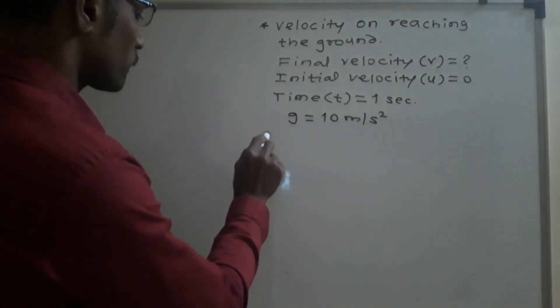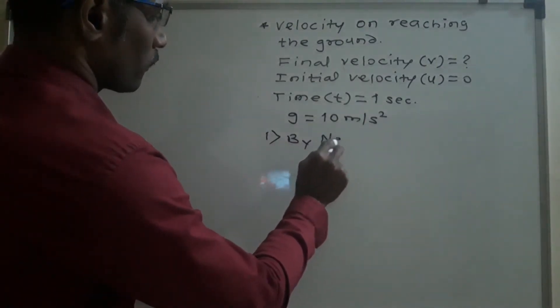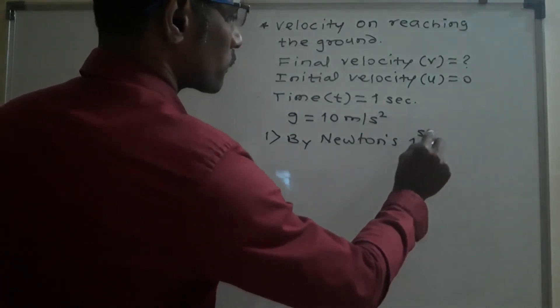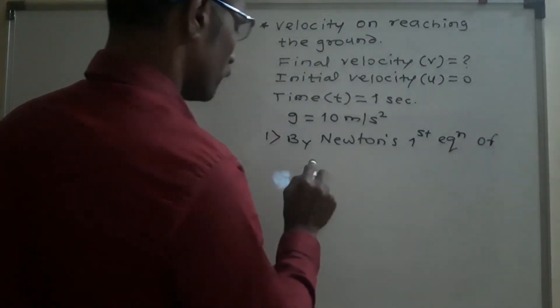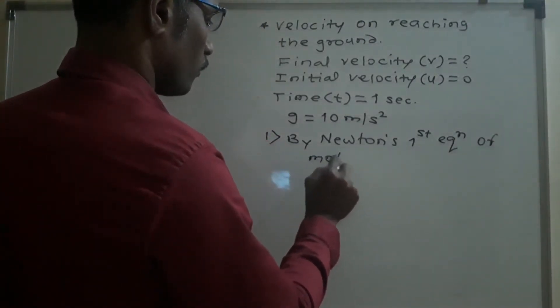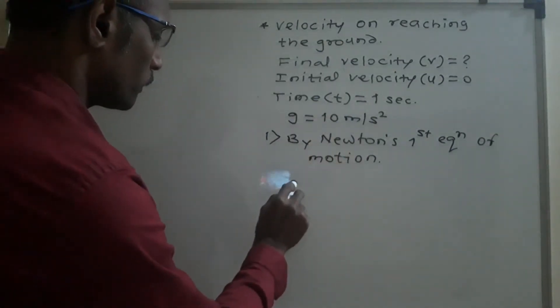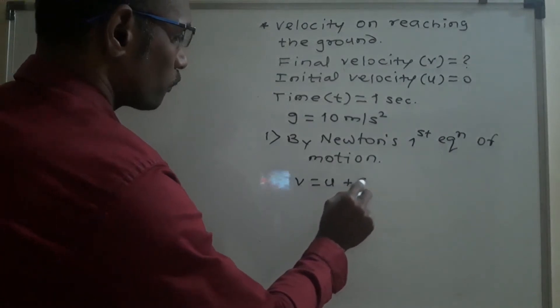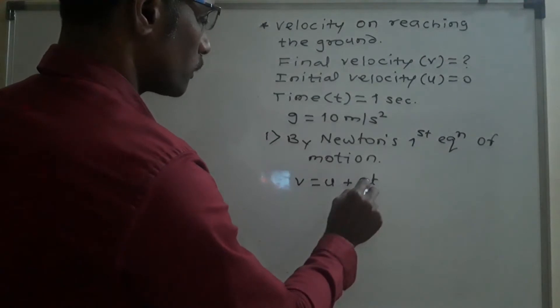Now first, by Newton's first equation of motion, we use here this equation, therefore v is equal to u plus a, but instead of a, we use here g.